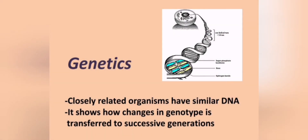Earlier in the year we learned about genetics, and we know that closely related organisms have similar DNA. Evolutionists use this as a fourth set of evidence for evolution, because it can show how changes in a genotype can be transferred to successive generations. In the same way that mitochondrial DNA can show relatedness, we can look at frozen fossils like mammoths and compare their DNA to living modern elephants and notice that they share a common ancestor. Sadly, bones that are fossilized are now rock, so there's no DNA in those — we can't do DNA testing on bony fossils hardened into rock.